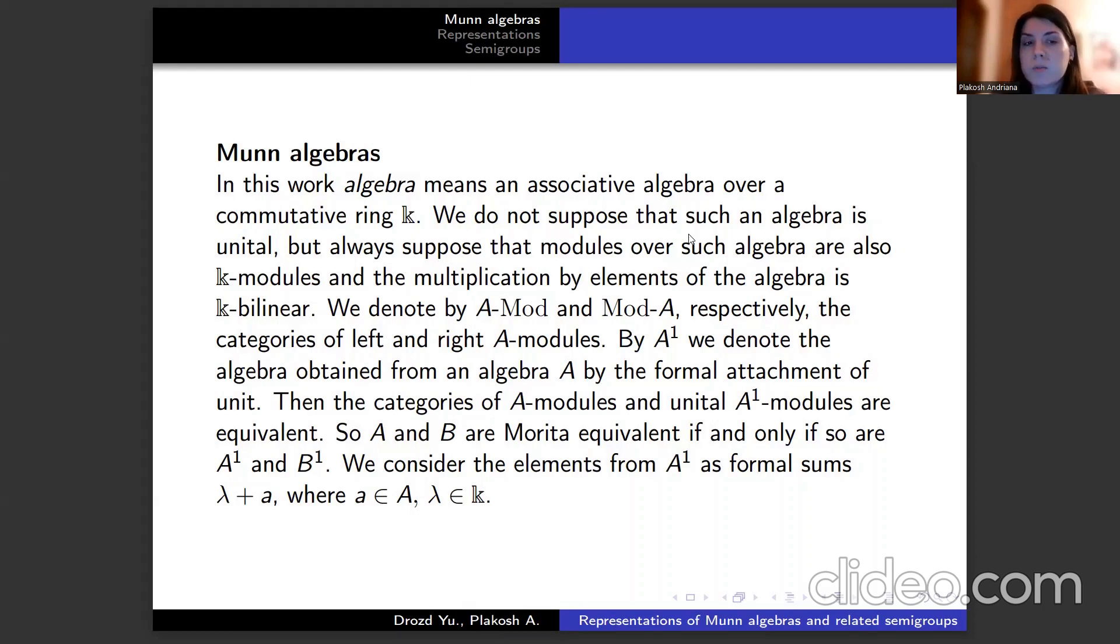By A¹ we denote the algebra obtained from an algebra A by the formal attachment of unit. Then the categories of A-modules and unital A¹-modules are equivalent. So A and B are Morita equivalent if and only if so are A¹ and B¹. We consider the elements from A¹ as formal sums λ+a.